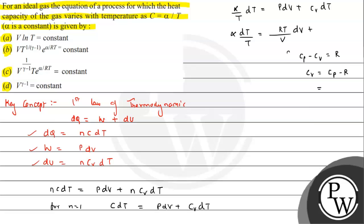Using the adiabatic index, Cp/Cv = γ. From this relation, (γ - 1)·Cv = R, so Cv = R/(γ - 1). Substituting this back into the expression, we can now write everything in terms of R and γ.